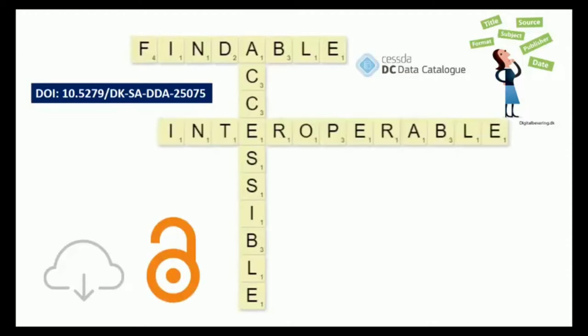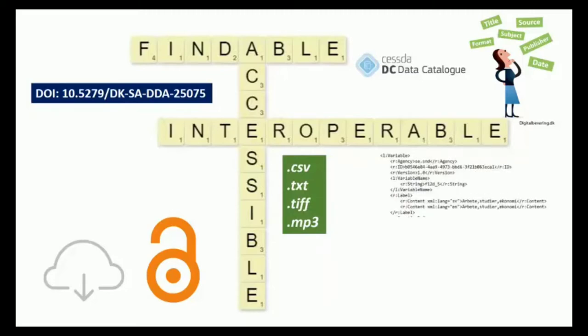Interoperable data have a standard, open and machine-readable file format, and the data elements are tagged with standard vocabularies or ontologies.